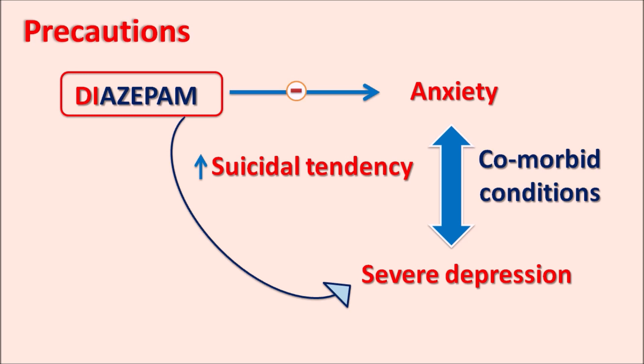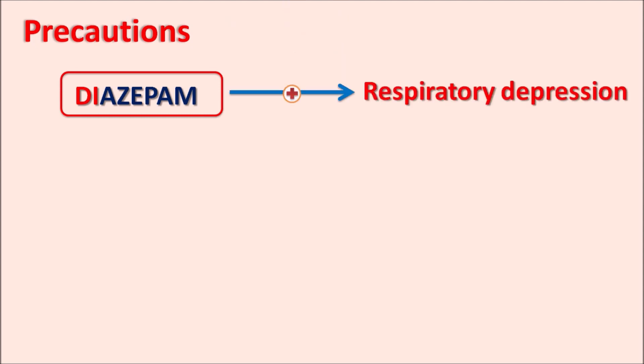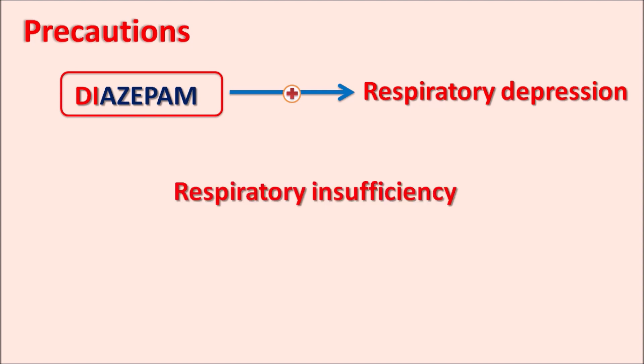Care should be taken when these drugs are combined, and in patients with severe depression this drug should be given carefully. Another important effect of diazepam is that it can produce respiratory depression, which is a common effect observed with many CNS depressants. If the patient already has any respiratory insufficiency or respiratory failure, diazepam can produce severe respiratory depression and even coma or death.